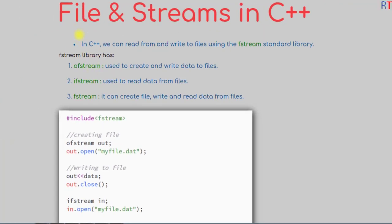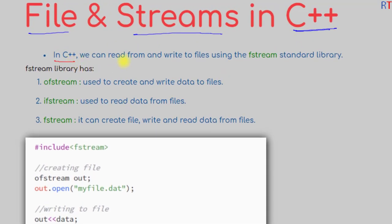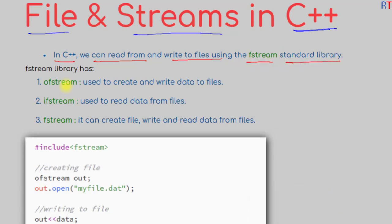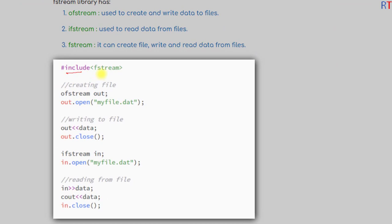In this video we're going to talk about files and streams in C++ programming. In C++ we can read from and write to files using the fstream standard library, which has three classes: ofstream (output file stream), used to create and write data to files; ifstream (input file stream), used to read data from files; and fstream, which can be used to create, write, and read data from a file.